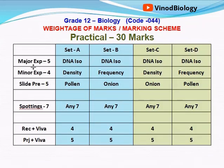Regarding how the exam is structured: the first experiment is common for all. If you have a smaller batch, they can select any one set, or they will prepare two sets and select one at the start. The fifth experiment — isolation of DNA — is always common.